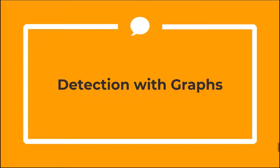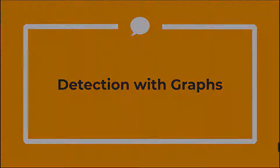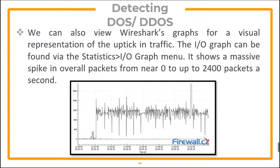Wireshark also indicates denial of service attacks with graphs. We can view Wireshark graphs for a visual representation of the uptick in traffic. The IO graph can be found in the Statistics > IO Graph menu. If it shows a massive spike in overall packets, it means there is a denial of service attack.